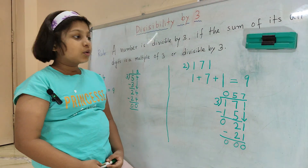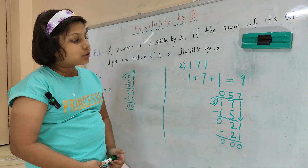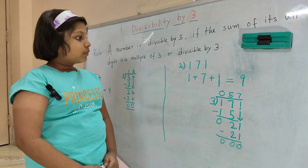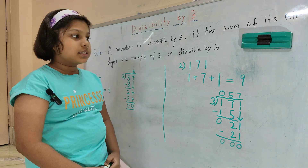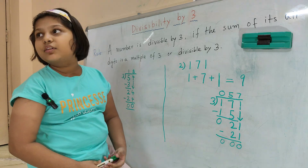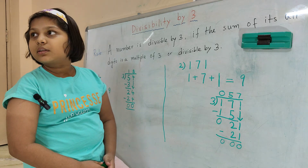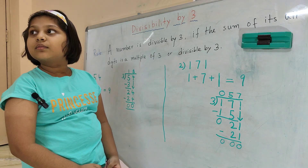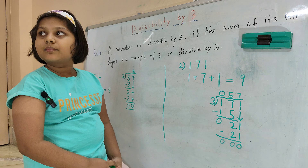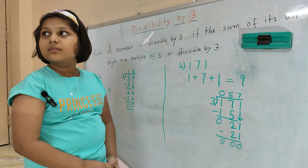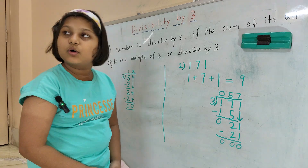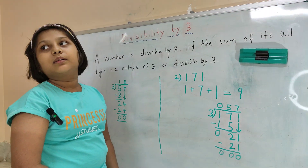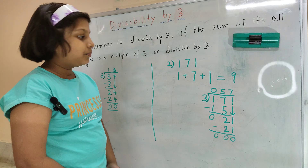So we come to know 171 is divisible by 3. It's proved that 171 is also divisible by 3. Okay, mamma. Is the concept clear? Yes, mamma.